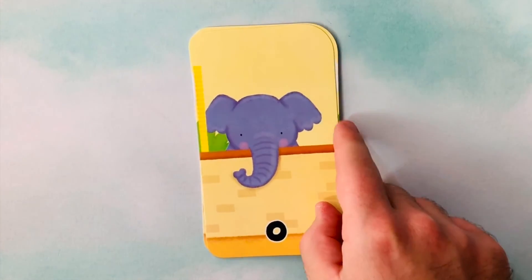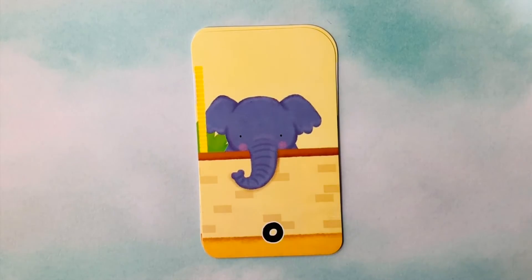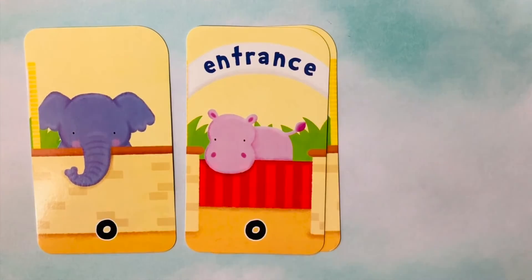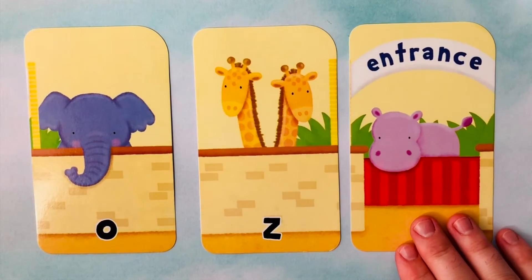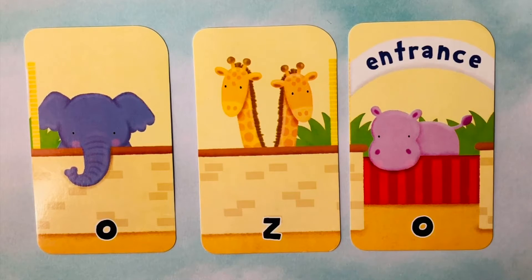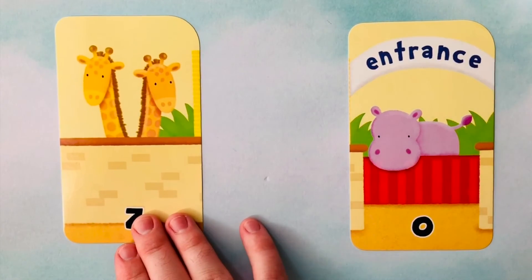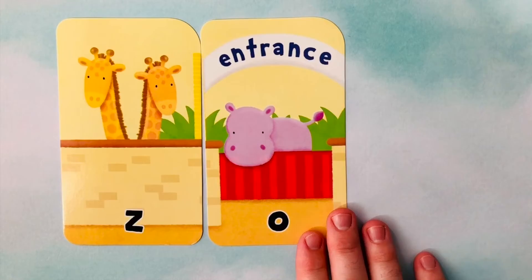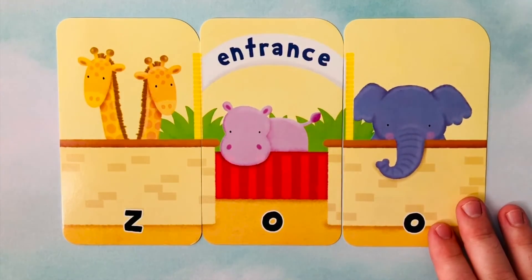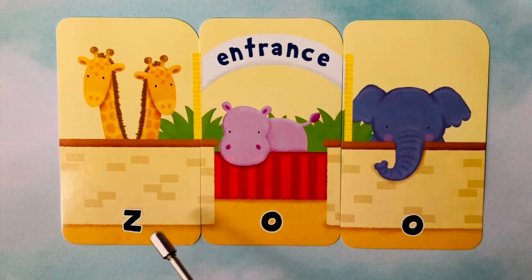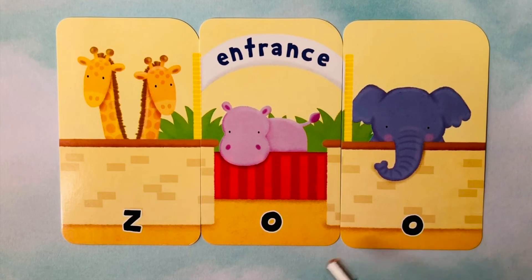Let's do another word. I see an O to start us off. There's also another O. And our third letter is a Z. I think we're trying to spell the word zoo. Zoo starts with a Z, follows with an O, and finishes with a second O. Z-O-O spells zoo.